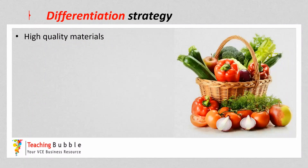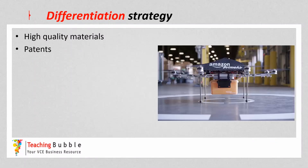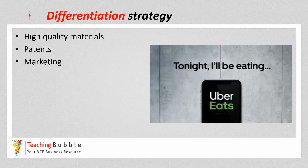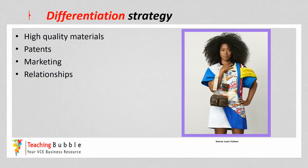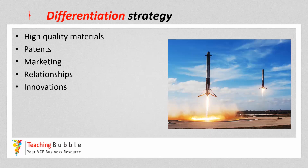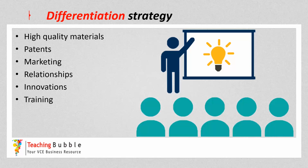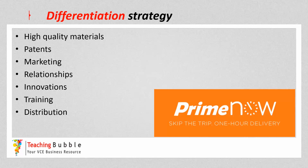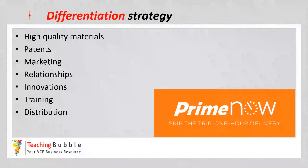Some ways businesses can be unique and differentiate themselves include: having high quality materials to improve the product and help it stand out; having legal protections such as patents, trademarks, and copyrights — like Amazon does with their drone delivery technologies; unique marketing that helps attract customers; unique relationships with suppliers giving access to quality materials competitors don't have; or a relationship with a celebrity, like Louis Vuitton has with Naomi Osaka; unique innovations like SpaceX and their reusable rockets; high quality employee training; or unique distribution channels like Amazon Prime's one-hour delivery in some US locations. There's a whole range of ways businesses can implement the differentiation strategy.